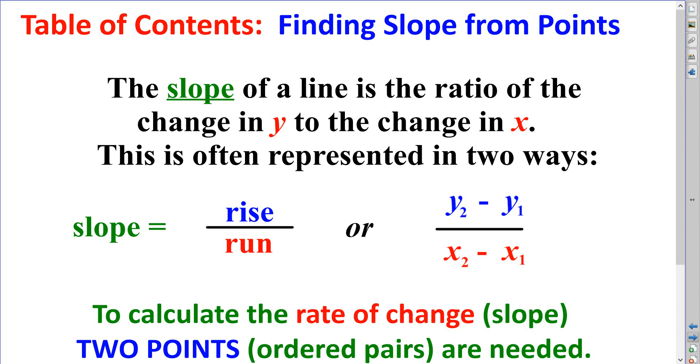We often represent it with these different words. Slope, rise over run if you are looking at a graph, or this formula: y2 minus y1 divided by x2 minus x1. We typically use this when we have points or a table of values.